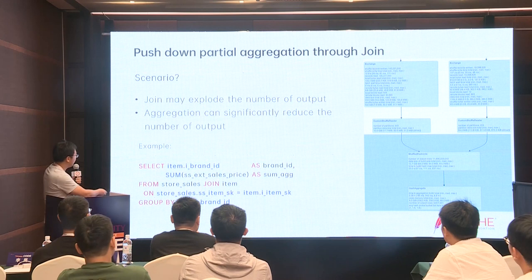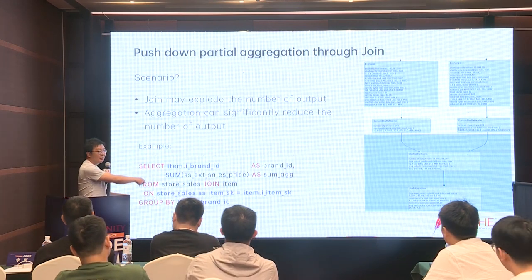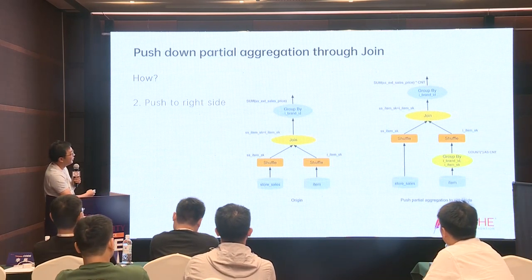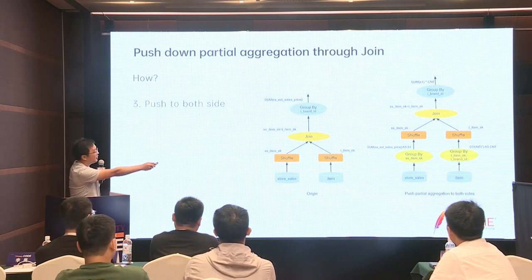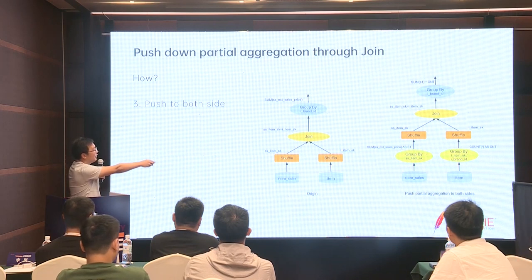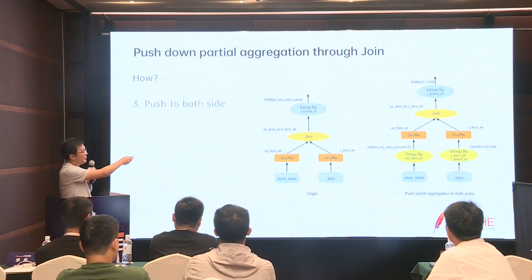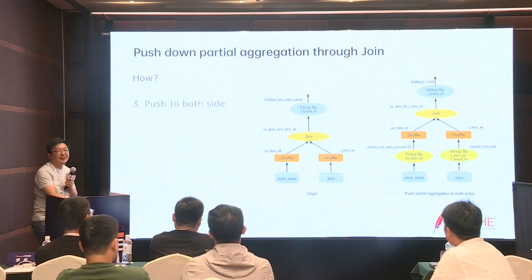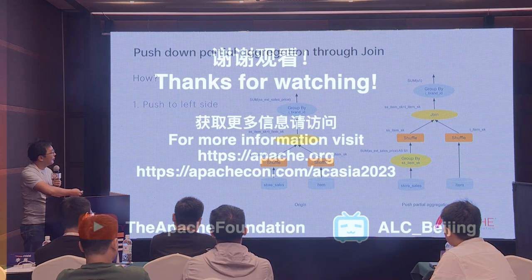比方说这个case是算了Sum的，然后如果把这个Sum换成count，它push下去的效果是：左右两边push下去的，这边是count，然后另外一边也是count，然后会变成Sum乘以这边的count乘以另外一边的count。Sum的count是这样实现的。 (Answer: for count, push count to both left and right sides. The original count becomes the product: left_count × right_count, because each row on the left matches multiple rows on the right and vice versa.)